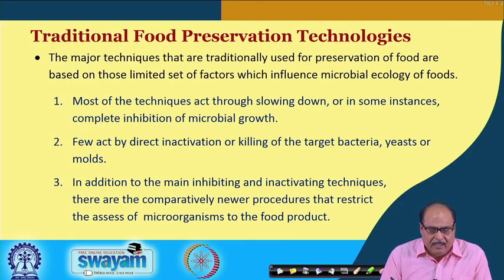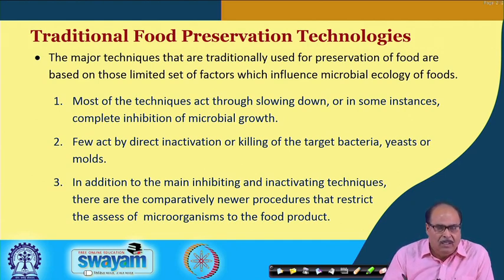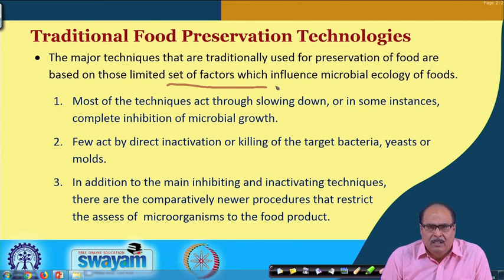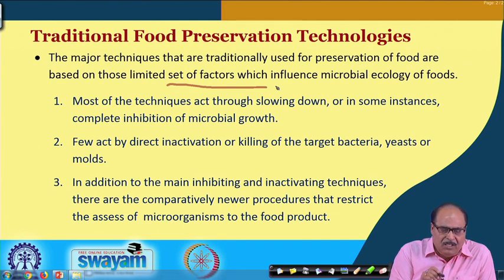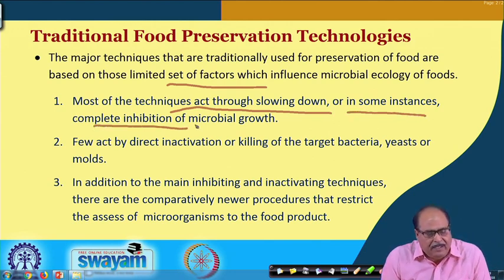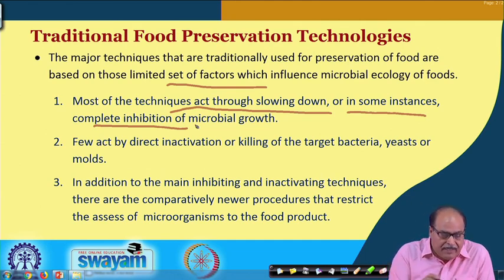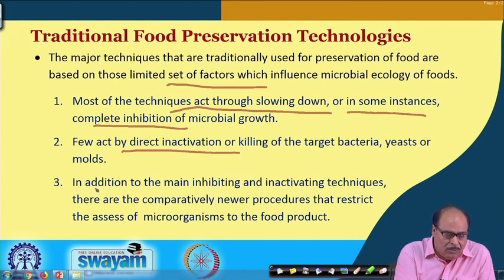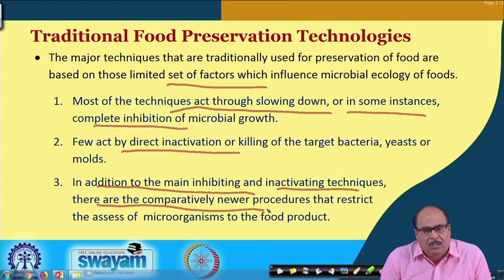The major techniques traditionally used for preservation of food are based upon those limited set of factors that influence microbial ecology of foods, as we discussed in the earlier class. Most of these techniques act through either slowing down or in some instances the complete inhibition of microbial growth. A few techniques act by direct inactivation or killing of the target bacteria and yeast. In addition, there are a few comparatively newer procedures that restrict the access of microorganisms to food products.